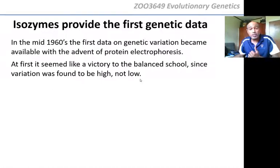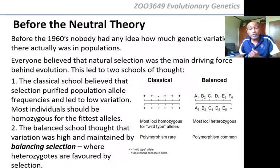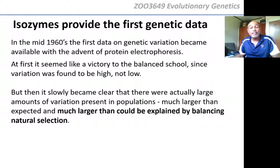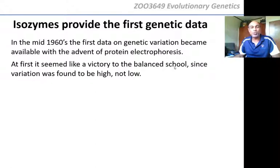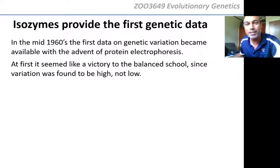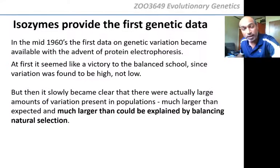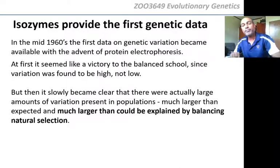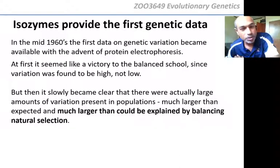The first genetic data showed that genetic variation was very high. High variation means the balancing school was probably right; low variation means the classical school was right. They found high variation after the first molecular data came. It seemed to be a victory for the balancing selection school — there was a lot of variation in the genome, and balancing selection must be the driving force. However, they were woefully wrong about that. That is what the neutral theory is all about.